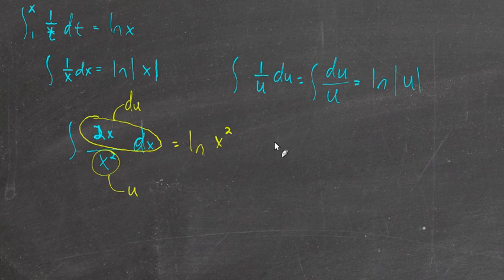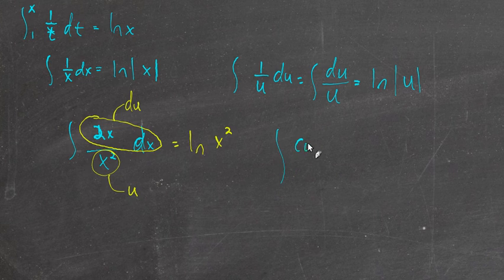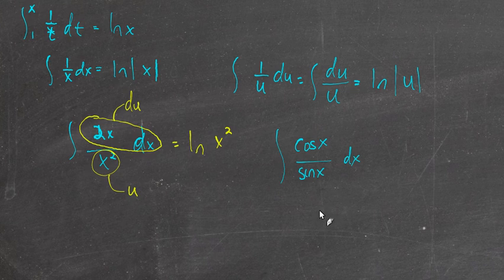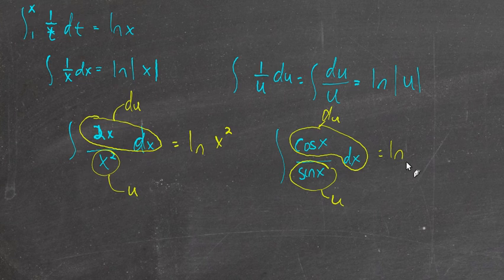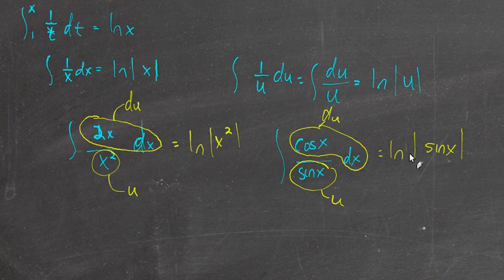Let's look at another example: the anti-derivative of the cosine of x over the sine of x dx. Again, sine of x could be treated as u, and cosine x dx could be treated as du, since the derivative of sine of x is cosine x dx. So this becomes the natural log of the absolute value of sine. If we took the derivative of this, we would get 1 over sine times the derivative of sine — because of the chain rule — which is cosine x dx.